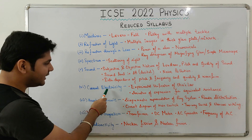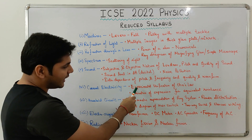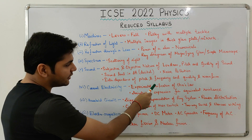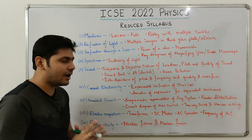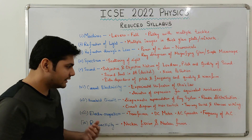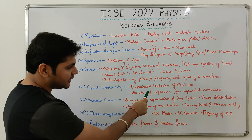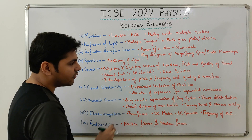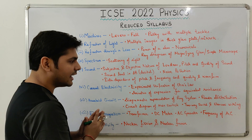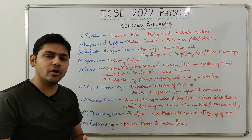Next, from Current Electricity, two topics have been removed: first, the experimental verification of Ohm's Law has been removed; and second, the derivation of the expression for equivalent resistance has been removed. You don't have to study both these topics from Current Electricity.